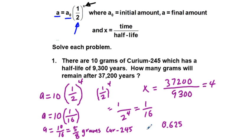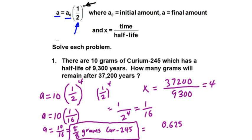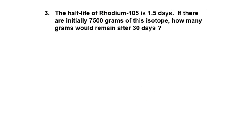I'm going to box in our answer and go on to our next odd number problem, which is problem 3. The half-life of rhodium-105 is 1.5 days. If there are initially 7,500 grams of this isotope, how many grams would remain after 30 days?